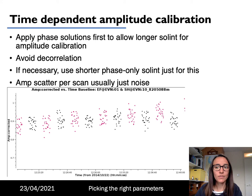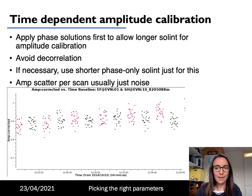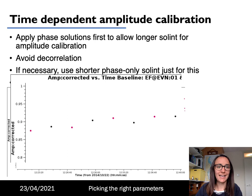The next step is amplitude calibration. In general, you can use a longer solution interval for this than for phase calibration. The best strategy is to apply the phase solutions first, then use a longer solution interval for amplitude calibration. This plot shows amplitude against time, with reference scans and target scans visible. The scatter in amplitude for each scan is usually just noise rather than the larger drifts we saw for phases, so one solution per scan is usually fine for amplitude calibration.